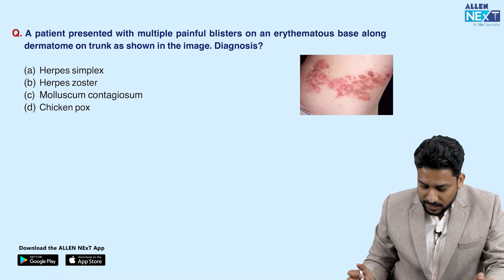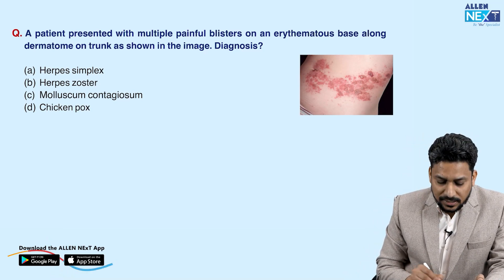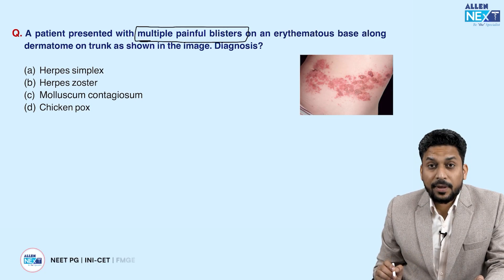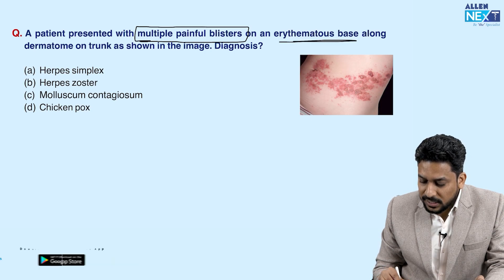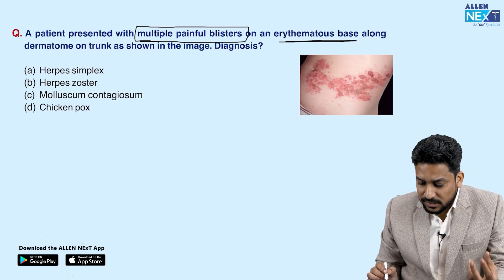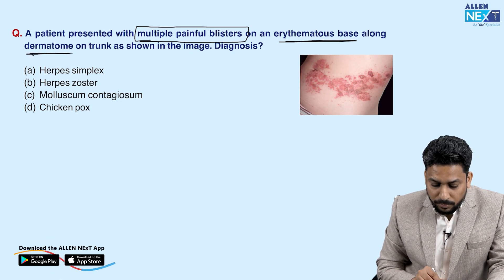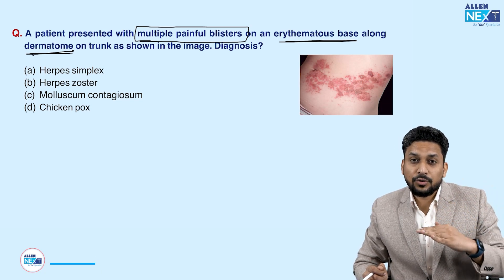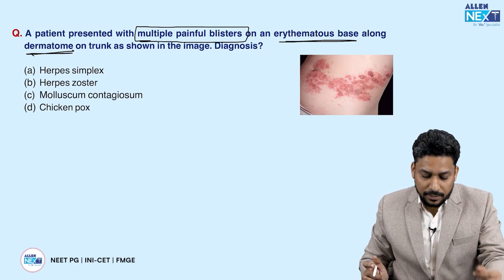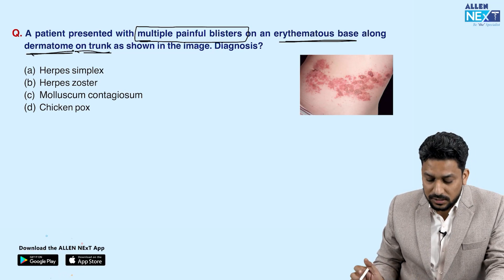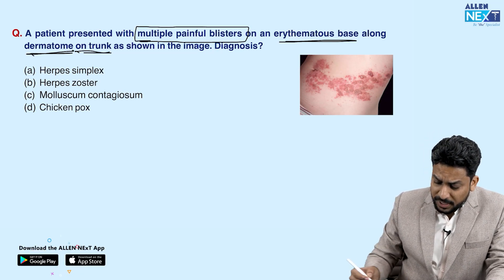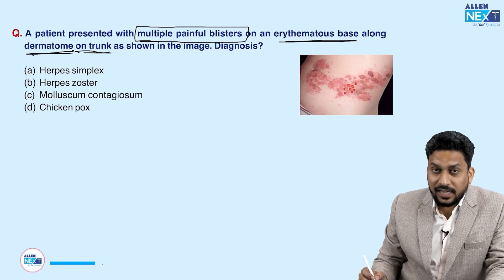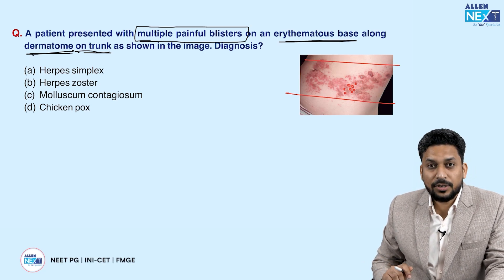In this first question, the examiner is asking that a patient presented with multiple painful blisters on an erythematous base — erythema means redness. So there is redness around these lesions along a dermatome. Along a particular nerve segment on the trunk as shown in the image, what is the diagnosis? The patient has presented with red, multiple painful fluid-filled lesions — that is blisters — along a particular nerve segment, that is a dermatome.